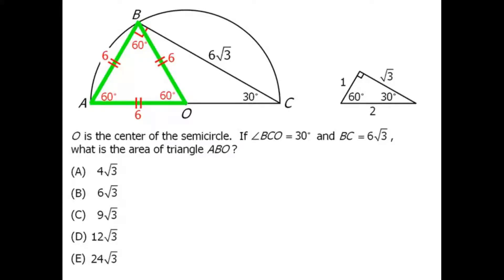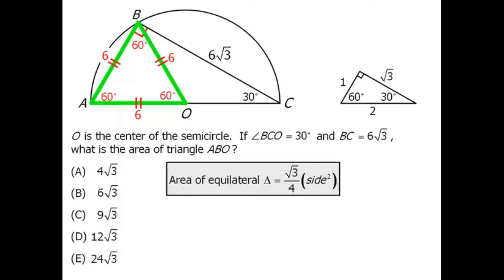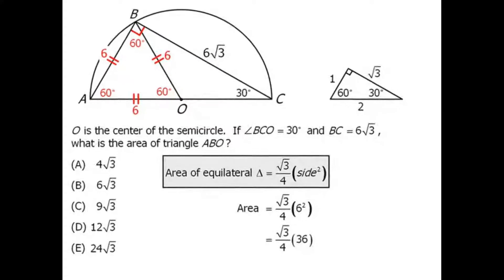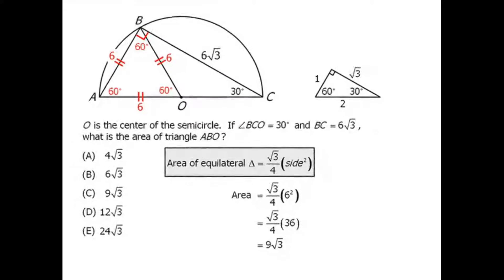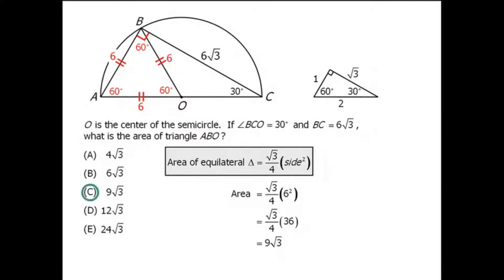We can find the area of this equilateral triangle using the formula for equilateral triangles. Since each side has length 6, plugging into the formula and simplifying gives us 9 root 3. So the answer is C.